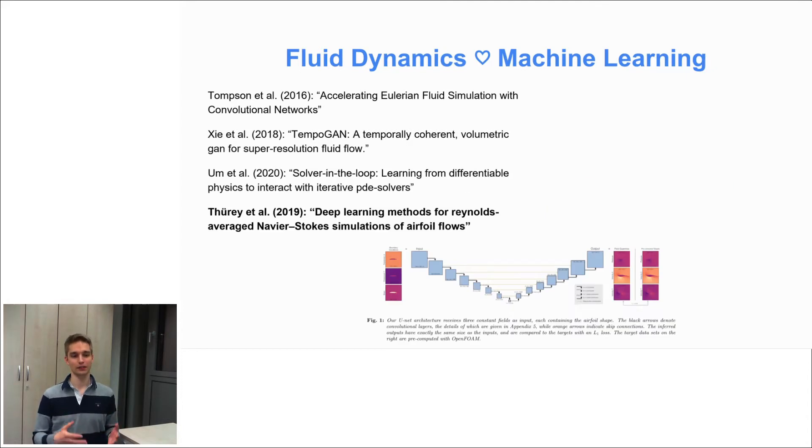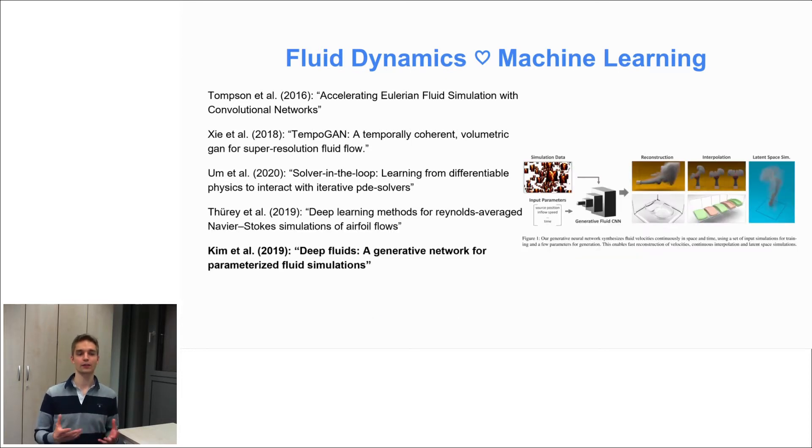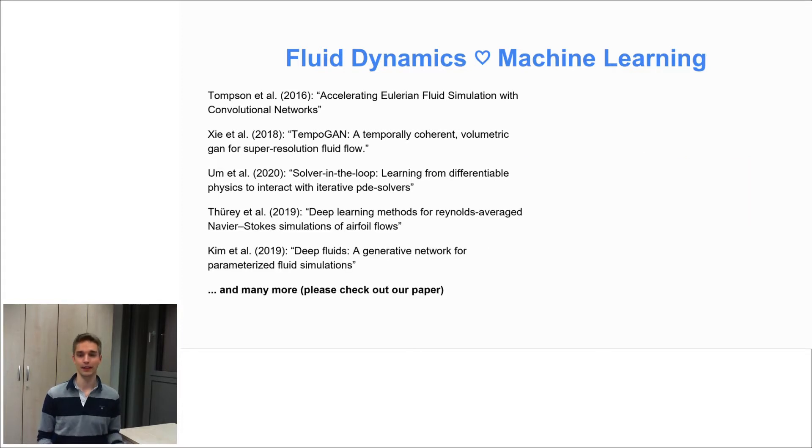Thury et al. used a U-Net in order to predict the Reynolds averaged Navier-Stokes simulations of airfoil flows. And Kim et al. proposed the generative network for parametrized fluid simulations. And there are also many more works and if you are interested in them then check out the related work section in our paper.